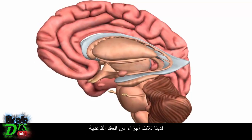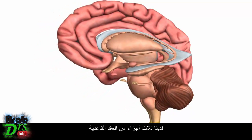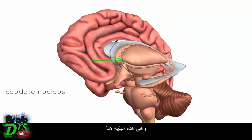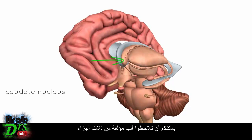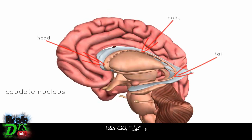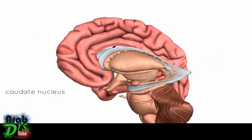So you've got three parts to the basal ganglia. You've got the caudate nucleus, which is this structure here. You can see it's got three parts: it's got a head, a body, and a tail which winds around like this. So that's the caudate nucleus.